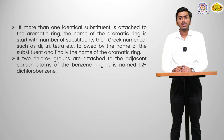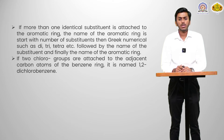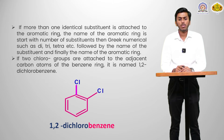If more than one identical substituent is attached to the aromatic ring, the name starts with the number of substituents using Greek numerals such as di, tri, tetra, etc., followed by the name of the substituent and finally the name of the aromatic ring. For example, if two chloro groups are attached to adjacent carbon atoms of a benzene ring, it is named as 1,2-dichlorobenzene.